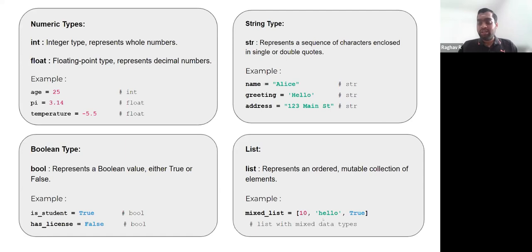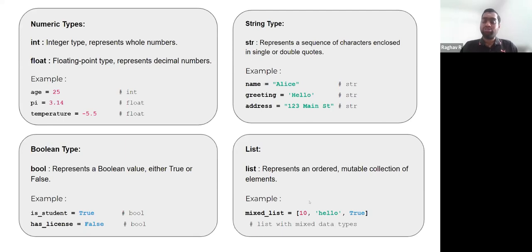Ordered because every element can be referred to by an order — the first element in this list is 10, the second element will be hello, and so on. Mutable because you can add and remove elements to this list. Python also supports lists with mixed data types, as shown here, which is an added flexibility to the programming language.